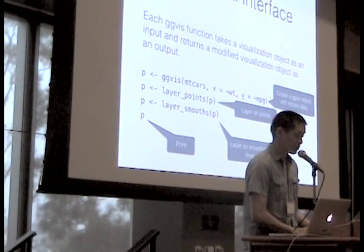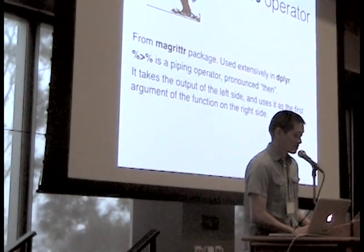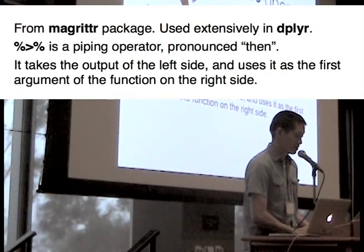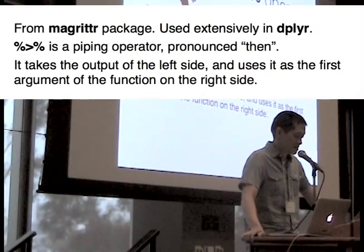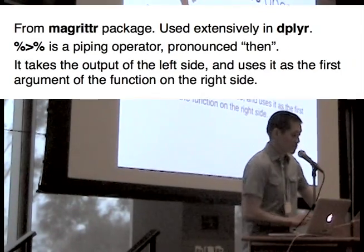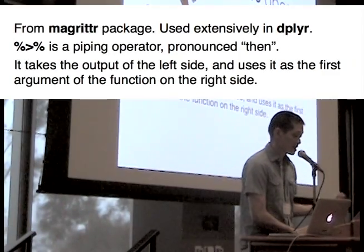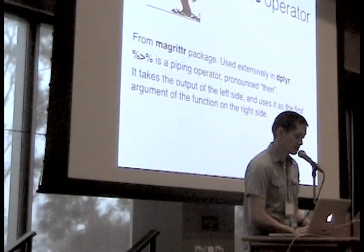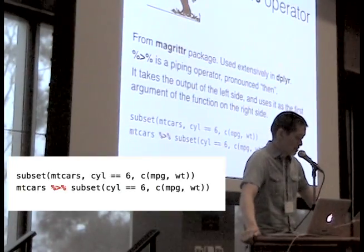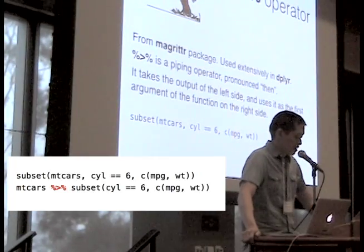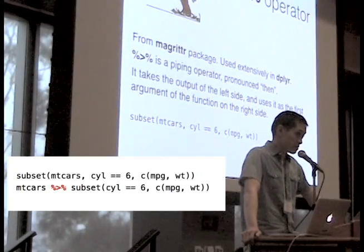But the examples that I've shown have been using this funny operator. This is from the magrittr package and it's also used extensively in dplyr. It's a piping operator pronounced 'then' and it takes the output of the left side and uses it as the first argument of the function on the right side. A real simple example, if you wanted to take a subset of the mtcars dataset, normally you do something like this, so the first argument is mtcars and then you're selecting out some rows and columns out of it.